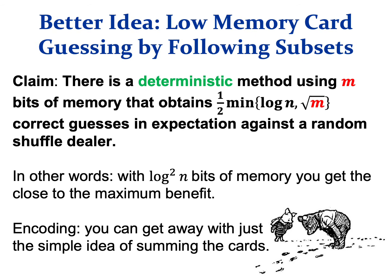But we can do better. This brings us to our first result: there is a deterministic guessing method using only m bits of memory that achieves half of square root of m correct guesses in expectation when playing against a random shuffle dealer. In other words, with log squared n bits of memory, one gets very close to the optimum possible with perfect memory. And we do it using the simple idea of remembering the last card.